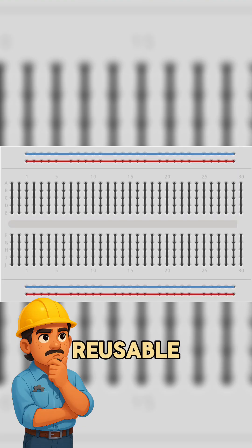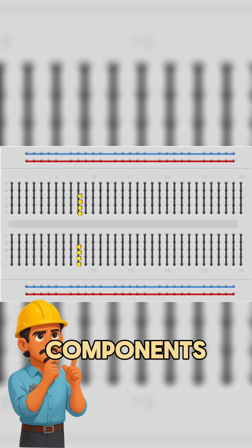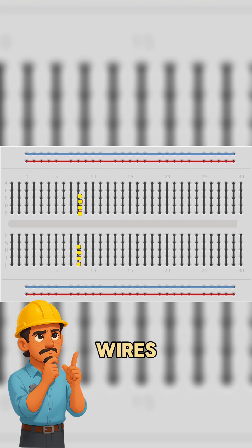Breadboards are reusable plastic boards with rows of holes. Under the surface, tiny metal clips connect certain rows, so when you plug in components, they join together without wires or solder.